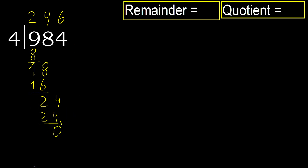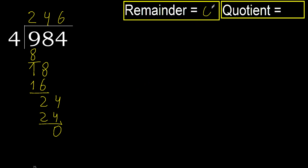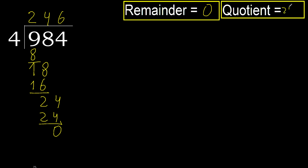There is no next number, therefore finish it. The remainder is 0, therefore 984 divided by 4 is 246.